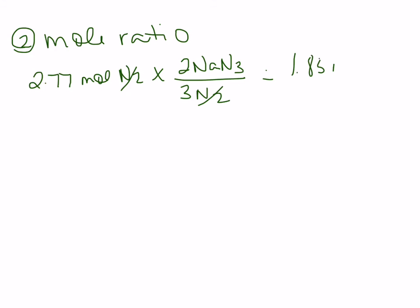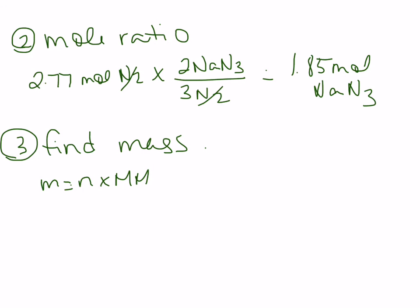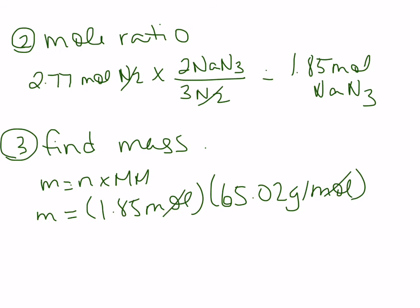Our last step, we're going to find mass because that's what the question is asking us to do. We're going to do moles times molar mass. So we take our 1.85 moles, multiply it by our molar mass, which is 65.02 grams per mole. Our moles cancel and we are left with 120.3 grams. So if we want to make 65 liters of nitrogen gas, which is what's needed to inflate an airbag in this example, we would need to start with 120.3 grams of sodium azide.